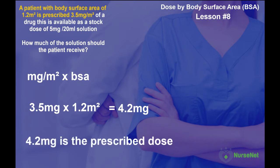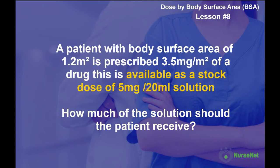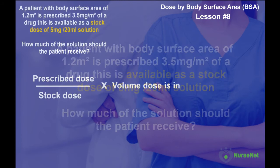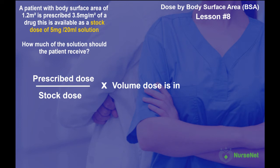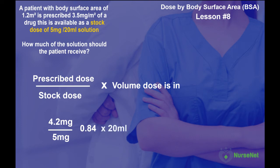Now we have the prescribed dose, let's move on to part two. The drug is available as a stock dose of 5 milligrams in 20 milliliters of solution. Using the drug calculation formula — prescribed dose divided by stock dose, multiplied by the volume of solution — that's 4.2 milligrams divided by 5 milligrams, giving us 0.84, multiplied by 20 milliliters, giving a total of 16.8 milliliters.